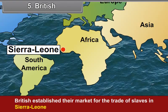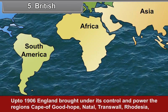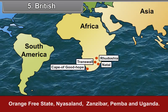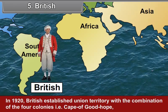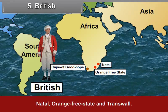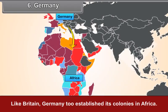Britain was not behind among European countries in establishing colonies in Africa. The British established their market for the trade of slaves in Sierra Leone and then established a colony for escaped Negro slaves. Up to 1906, England brought under its control the regions of Cape of Good Hope, Natal, Transvaal, Rhodesia, Orange Free State, Nyasaland, Zanzibar, Pemba and Uganda. In 1920, the British established a Union territory with the combination of four colonies: Cape of Good Hope, Natal, Orange Free State and Transvaal.